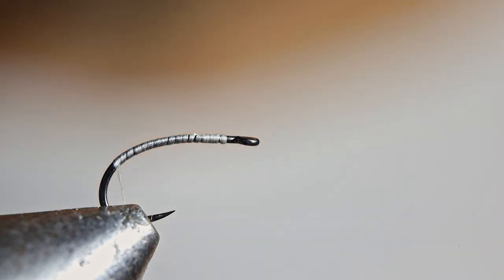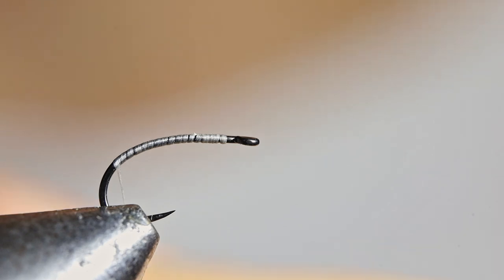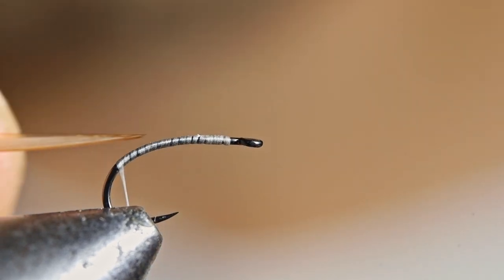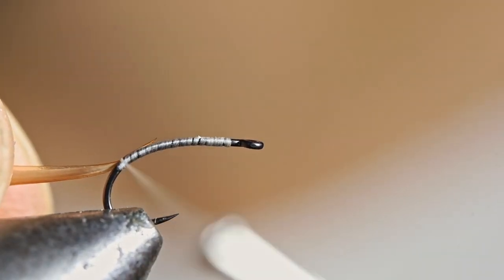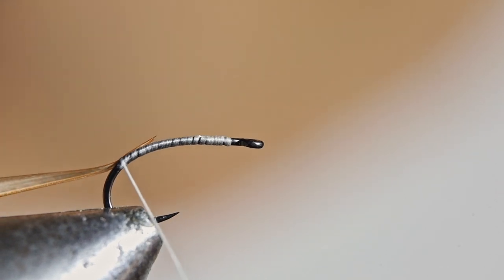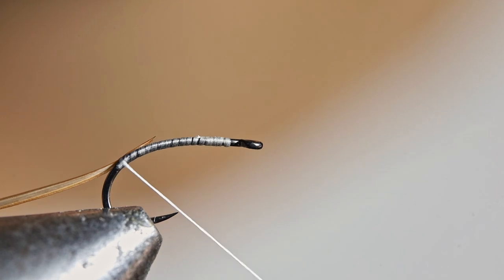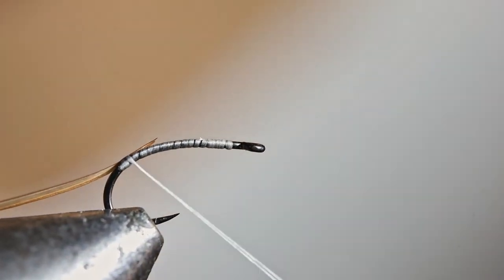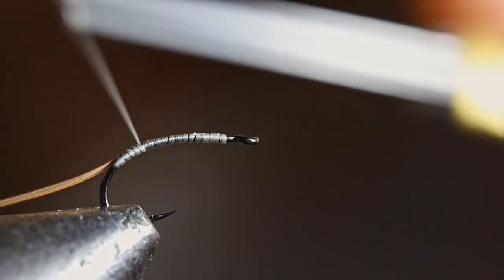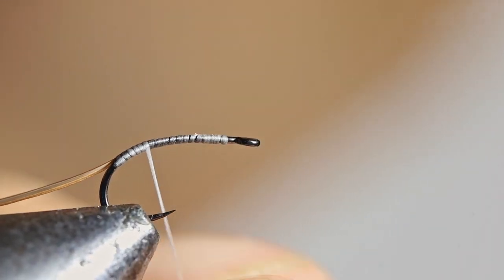Having the biot in your mouth helps to soften it and prevent it from cracking or snapping while you are wrapping it. Now, I'm going to tie the biot in at the tip. And I like the clear part, you'll see it's got a side with a ridge, and a side that's sort of transparent. I like that transparent side facing up, because you want that to be facing forwards while you're wrapping it.